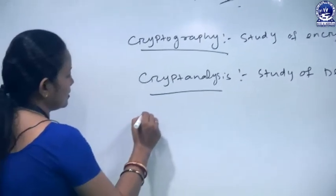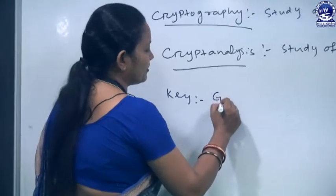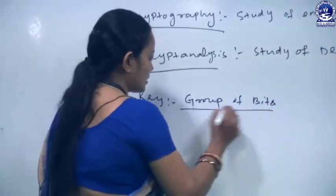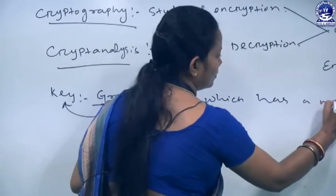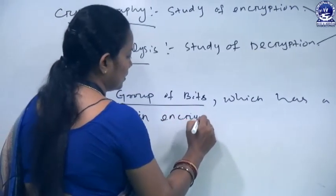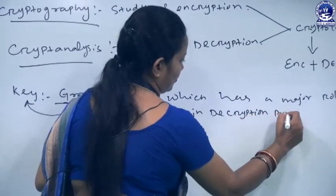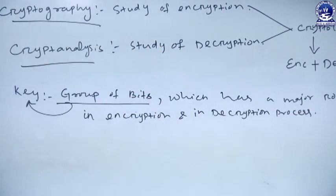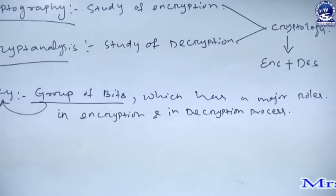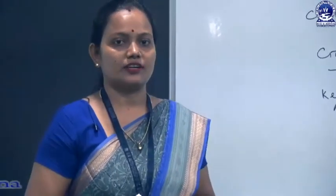Next, we will know what is a key. A key is a group of bits which has a major role in the encryption or decryption process. We will now see the different ways through which we encrypt the plaintext to its ciphertext.